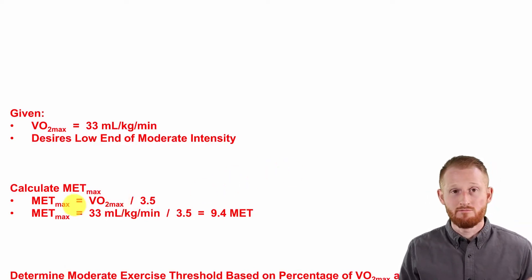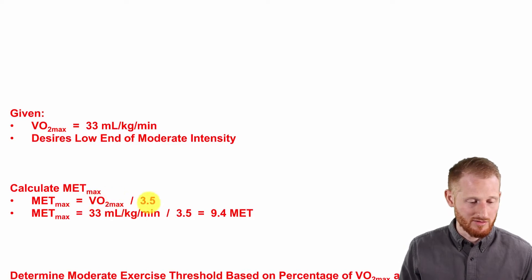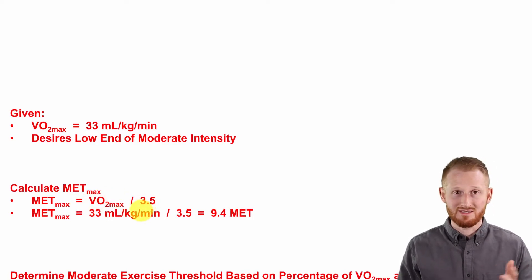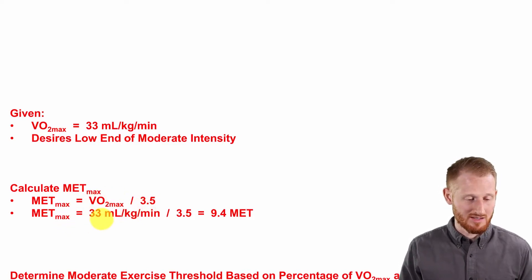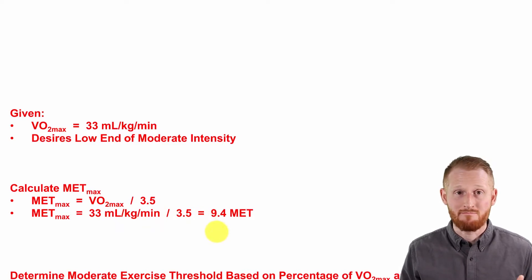MET is nothing more than our VO2 divided by 3.5, so MET max is the same. So our MET max is her VO2 max of 33 mLs per kg per minute divided by 3.5, giving us 9.4 MET as her MET max.